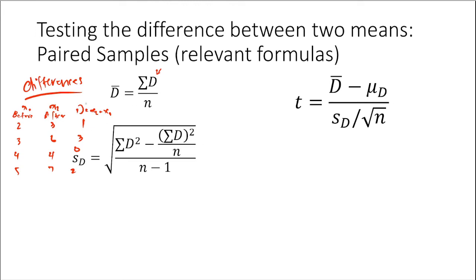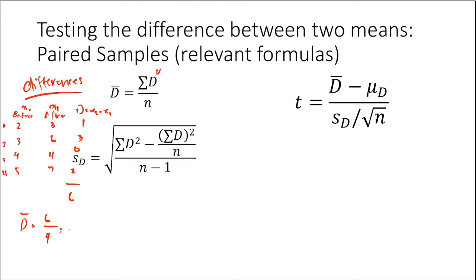Then you get the sum of the D values and divide by the number of paired samples. We have 4 paired samples, so d-bar equals the summation of D divided by n, which is 6 divided by 4, giving us 1.5. That is your d-bar.